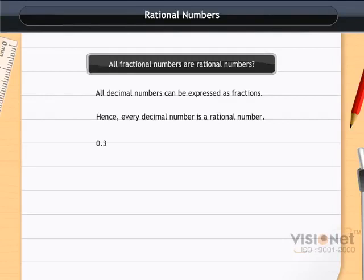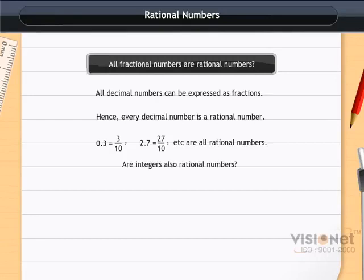For example, 0.3 is equal to 3 by 10, 2.7 is equal to 27 by 10, etc. All these are rational numbers. Are integers also rational numbers?